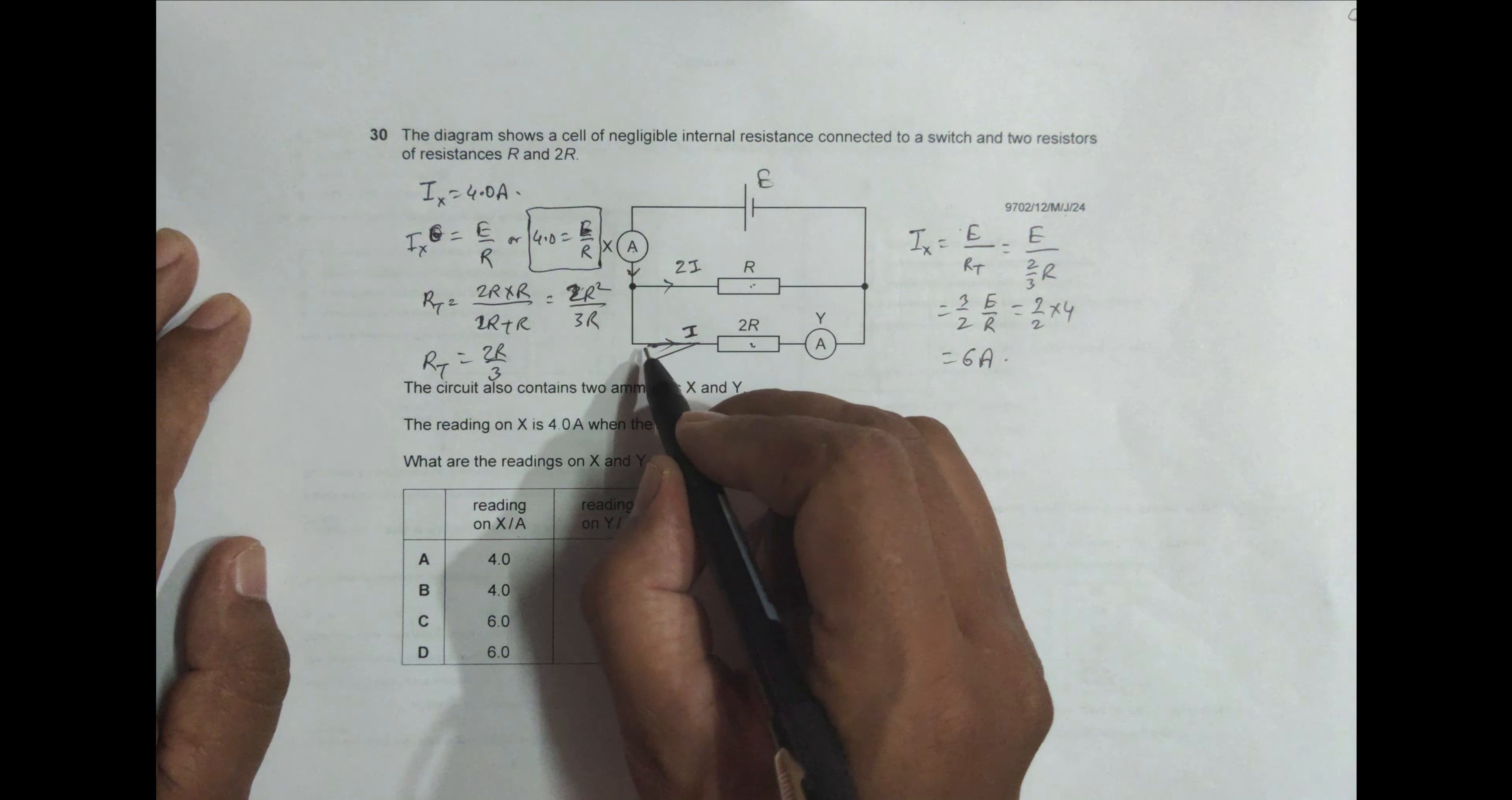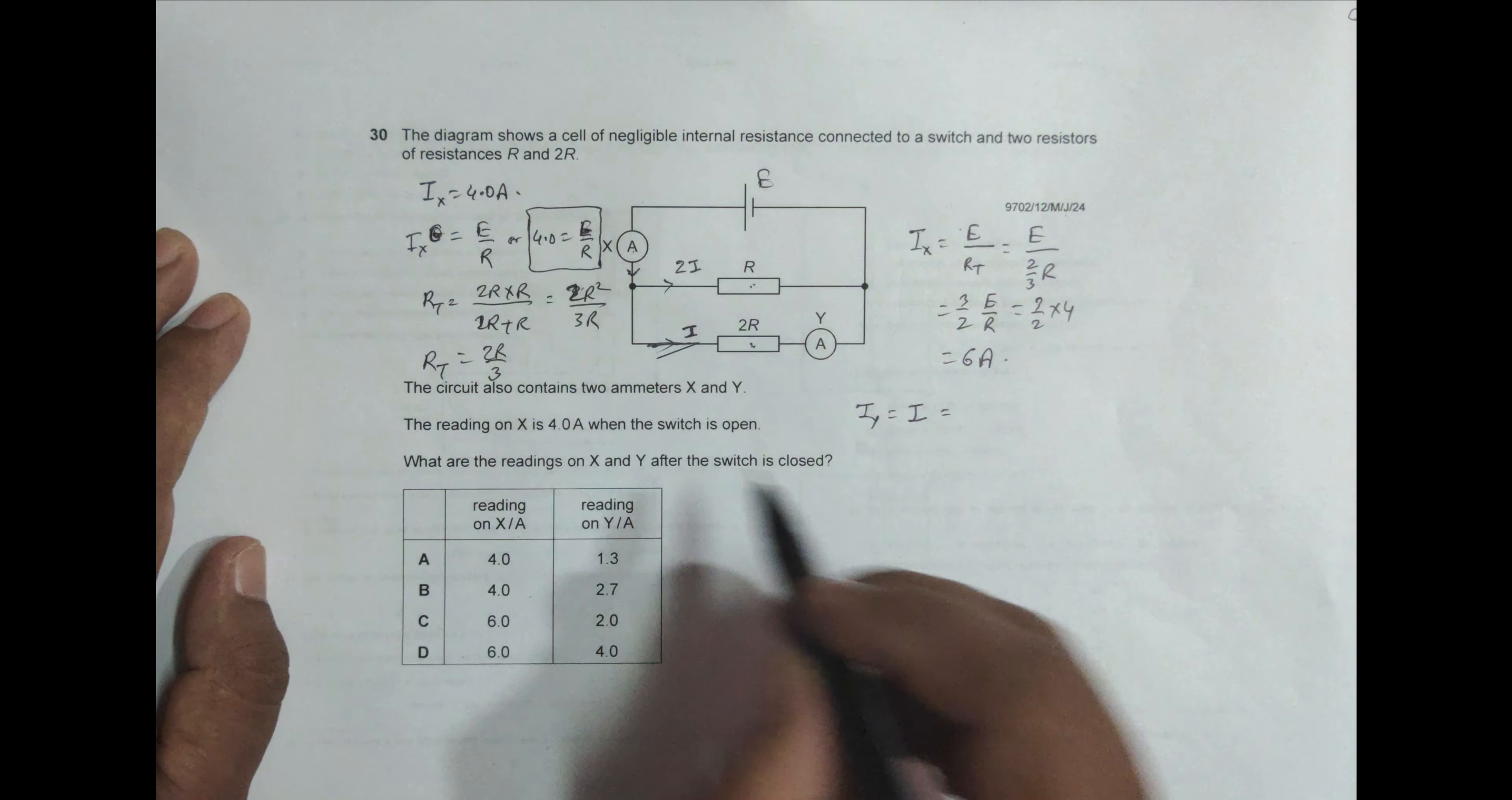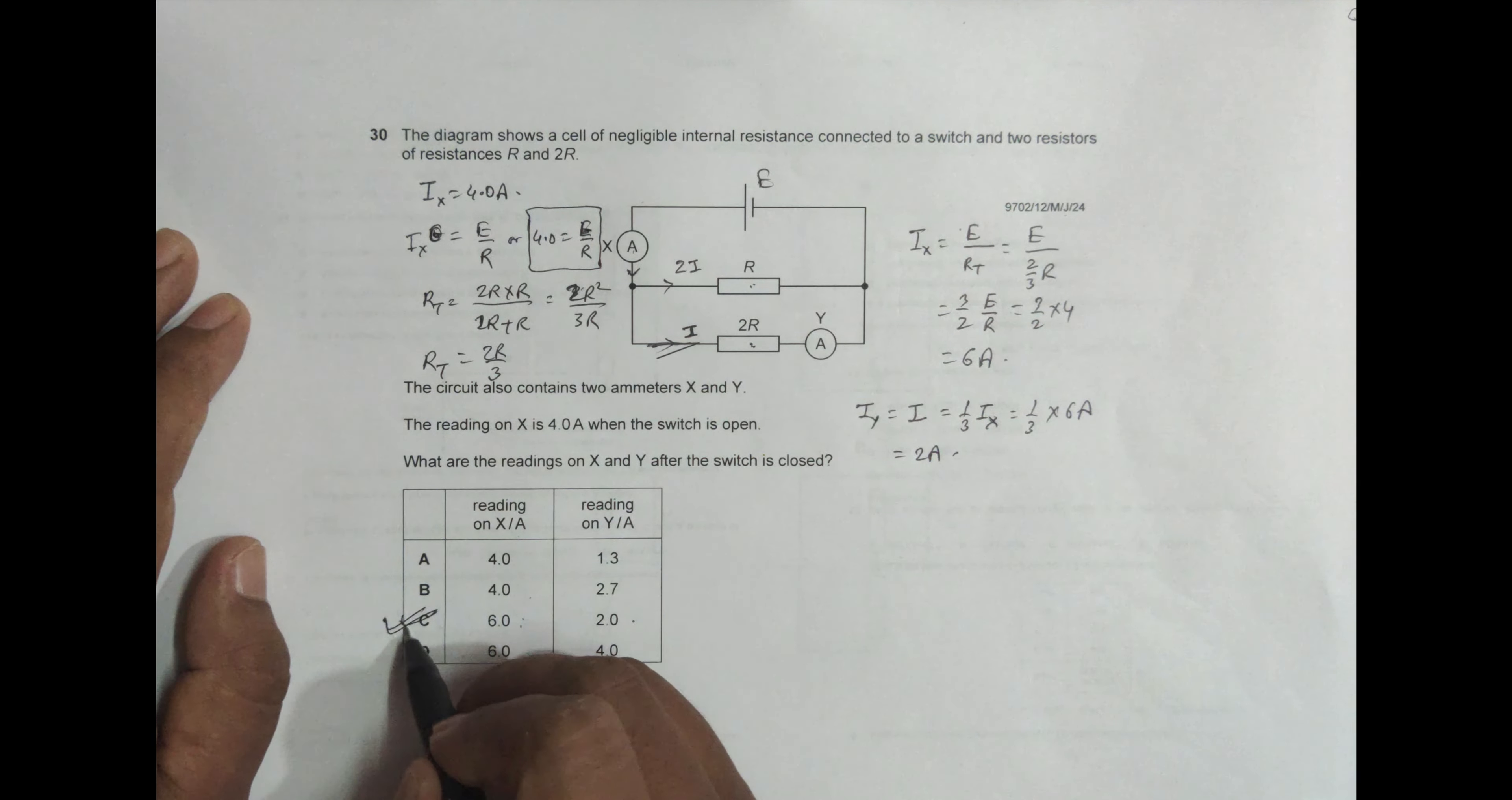So our I_Y is equal to simply I, and this I is equal to one third of this I_X. I_X divides into 2I and I, total should be 3I, so I_Y is equal to 1 by 3 into 6 Amperes, that's equal to 2 Amperes. So the current here should be 2 Amperes and current here should be 6 Amperes, which makes choice C the correct choice.